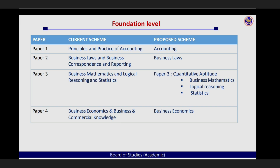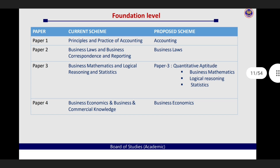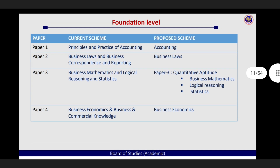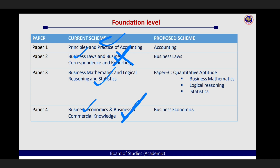Foundation level ka detail hai. Currently aapke foundation mein four papers hote hain, but subjects six hote hain. Ab ye six subjects ko reduce karke four subjects kar diya gaya hai. Aapka business correspondence and reporting hata diya gaya. Business commercial knowledge hata diya gaya hai. And we are only left with four subjects and four papers.